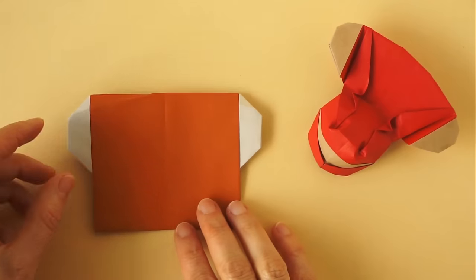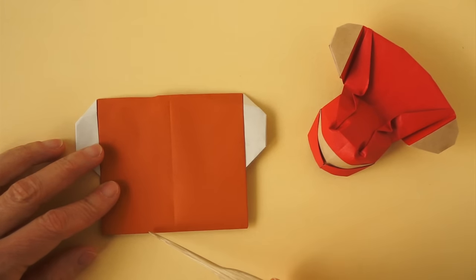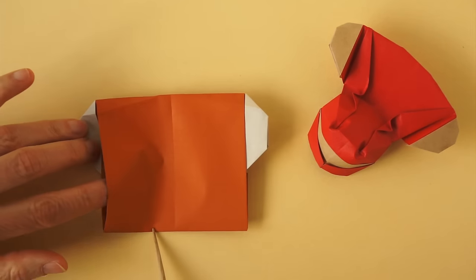Turn it over. We are going to make a fold starting at this corner and finishing here, about one third of this whole distance. We place our finger underneath.